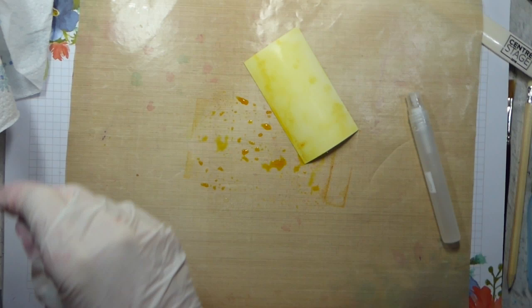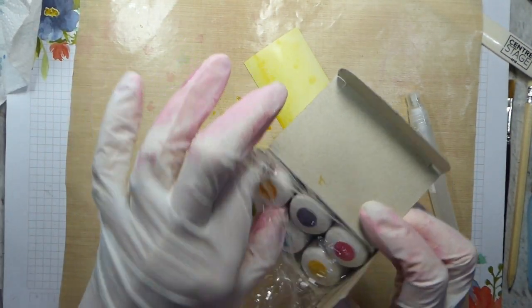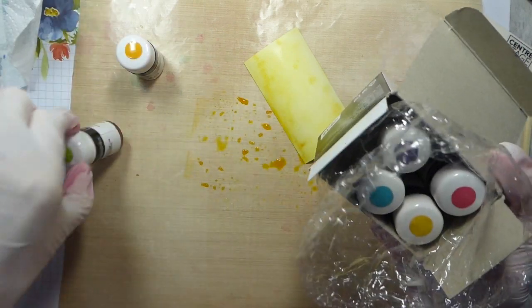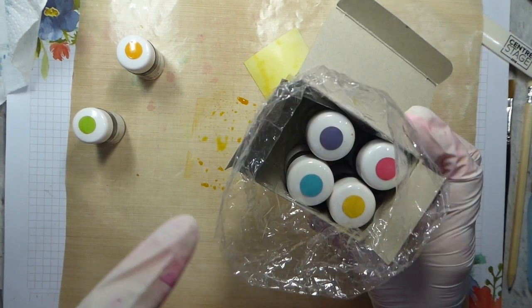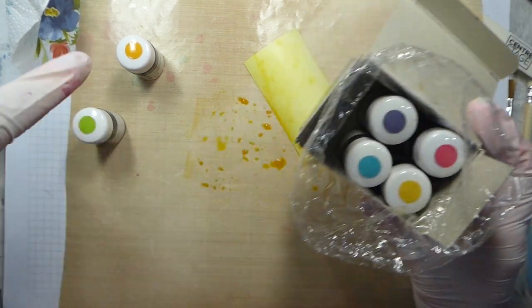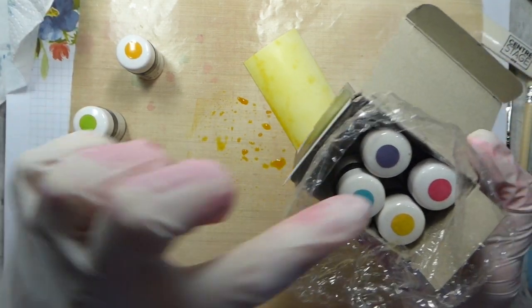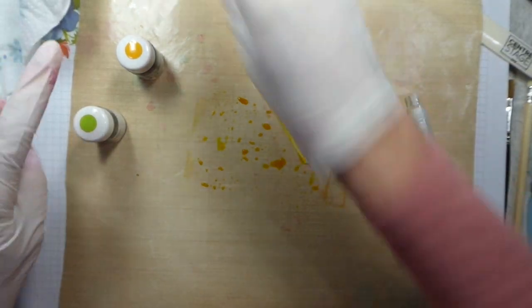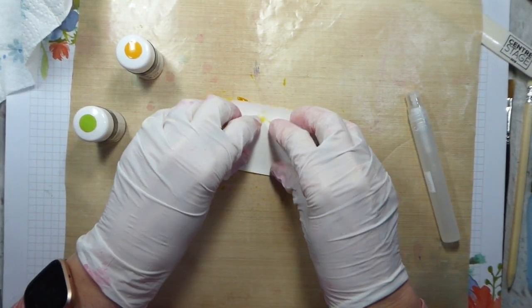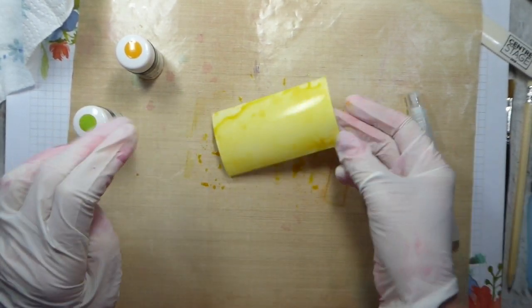I'm using some of our sprinkles. They come in six colours. Mango Melody, Gorgeous Grape, Bermuda Bay, Daffodil Delight, and Melon Mambo, and Granny Apple Green. I'm going to be adding some more Mango Melody and Granny Apple Green.